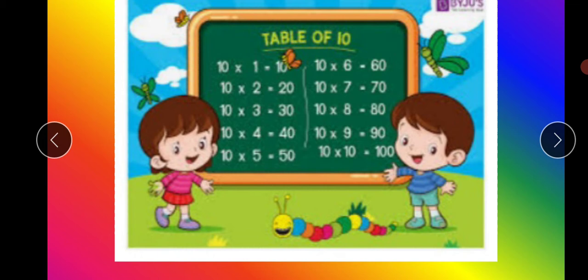10 sixes are 60. 10 sevens are 70. 10 eights are 80. 10 nines are 90. And 10 tens are 100.